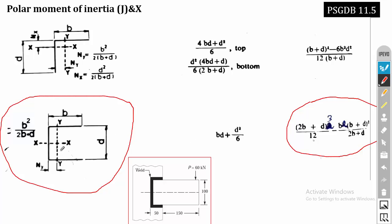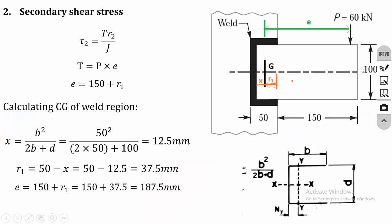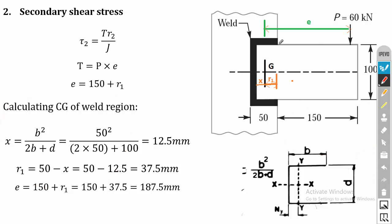In the previous problem the eccentricity value was directly given, so we took it directly from the drawing. But here the eccentricity value is not directly given. The 150mm is the distance between the load and the vertical column, but we have to locate the center of gravity G to identify the eccentricity, because eccentricity is the distance from the center of gravity to the load acting point.